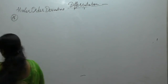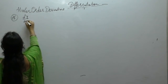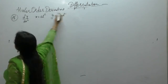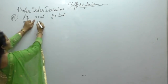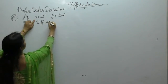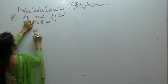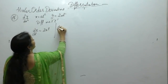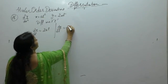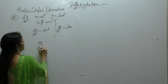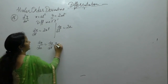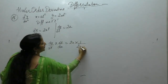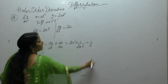Next problem: find d²y/dx² if x equals at² and y equals 2at. These are functions of t, so differentiate with respect to t. dx/dt: derivative of t² is 2t. dy/dt: derivative of t is 1. So dy/dx equals dy/dt times dt/dx, which is 1 upon 2at, giving 1 upon t.